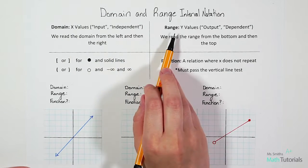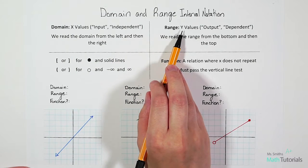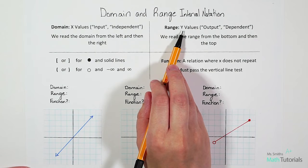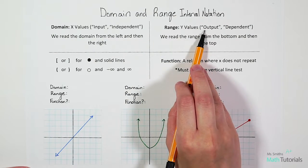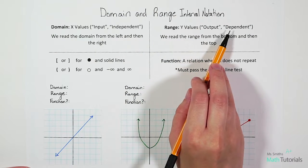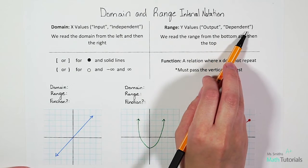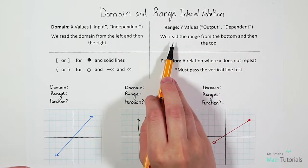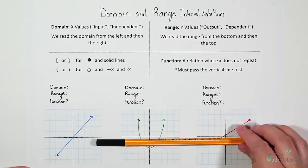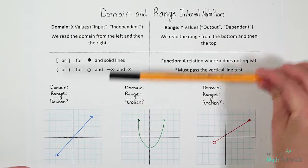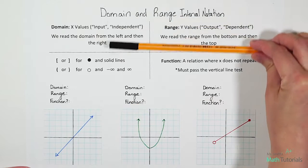For our range, that's all of our y values, so we're focusing on the y-axis. It's also known as the output or the dependent. We read the range from bottom and then top.